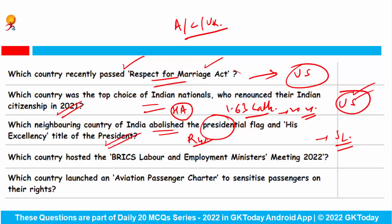Which country hosted the BRICS Labor and Employment Ministers' Meeting 2022? The BRICS presidency for this year is with China, so any BRICS meeting — whether Labor and Employment Ministers or External Affairs Ministers — will be hosted by China.